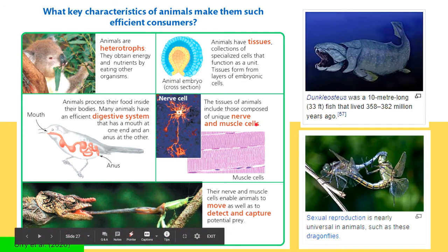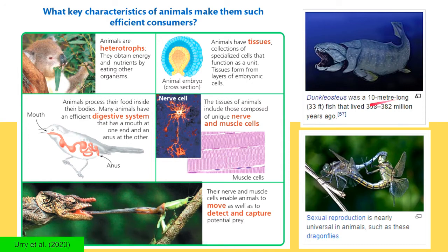We have here more images. This is Dunkleosteus, a 10-meter long fish, which is an extinct animal species that lived 358 to 382 million years ago. This one shows us the sexual reproduction of animals, specifically dragonflies — two dragonflies mating.